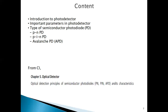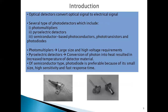The purpose of optical detectors is to convert the optical signal to an electrical signal — as opposed to optical sources like the LED and laser diode, which convert electrical signals to optical signals. There are several types of photodetectors that can be used in an optical system, including photomultipliers, pyroelectric detectors, and semiconductor-based photoconductors, phototransistors, and photodiodes.